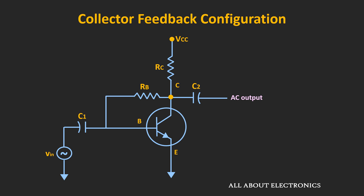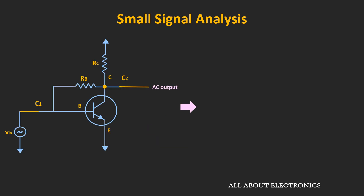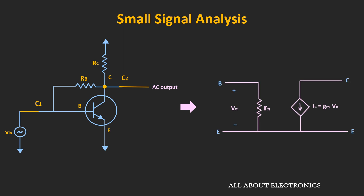For the small signal analysis, we will follow the same steps. We will consider all the DC voltage sources in the circuit as zero, while we will replace the coupling capacitors by short circuits. Then we will replace the BJT by the small signal model. The input signal is applied between the base and the emitter, while the collector resistor RC is connected between the collector and the emitter terminal.